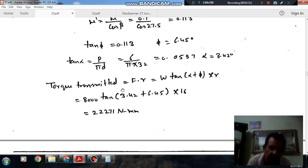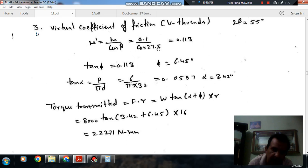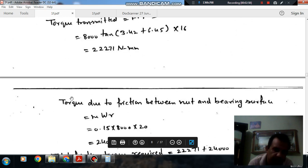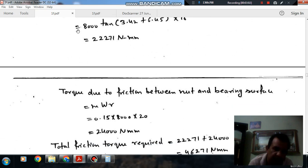Now, when we consider the rotation of the screw, the torque transmitted is w tangent of alpha plus phi into r. Here w is 8000, alpha is 3.42, phi is 6.45, and radius is 16 mm because diameter is 32 mm. So that comes out as 22,271 newton-millimeters.